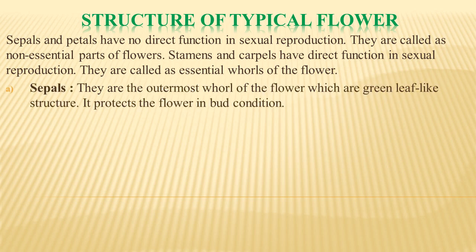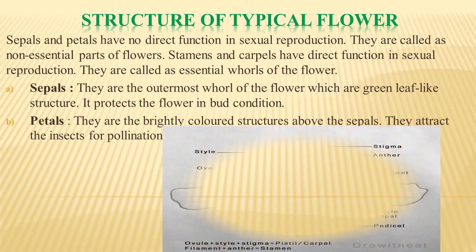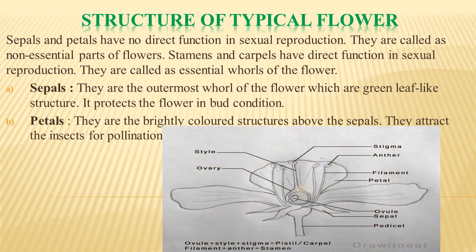Sepals are the outermost part of the flower — they are green leaf-like structures that protect the flower in the bud condition. Petals are the brightly colored structures above the sepals, and they attract insects for the process of pollination. You can see another important image of the flower here.